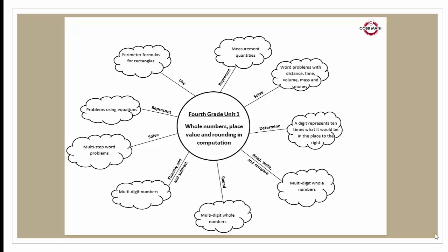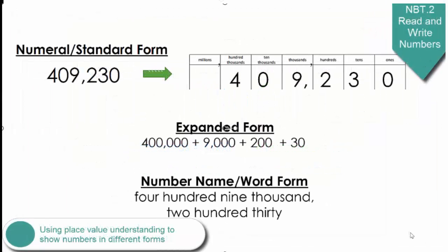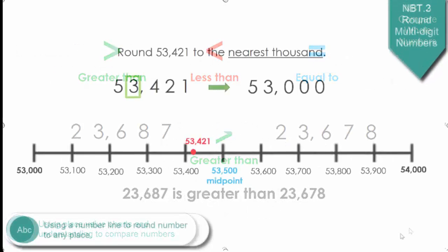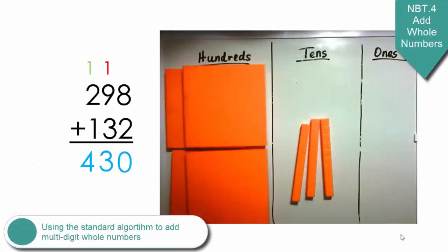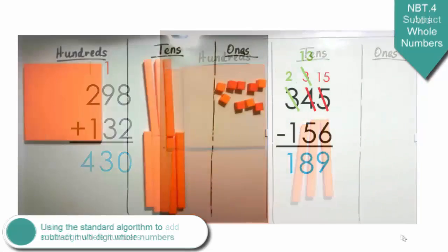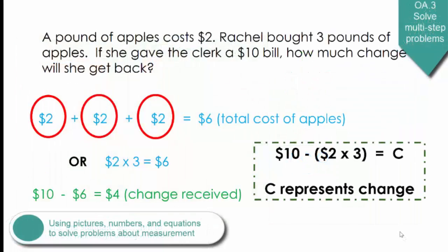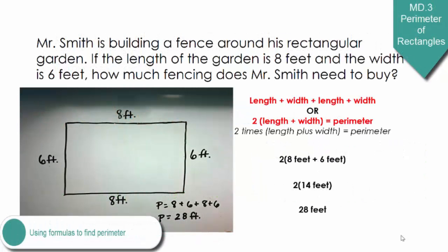In summary, in Unit 1, 4th grade students will understand the power of 10, read and write numbers up to 1 million in numerals, number names, and expanded form, compare multi-digit numbers using symbols, round numbers to any place, fluently add and subtract multi-digit whole numbers using the standard algorithms, solve multi-step problems about measurement and use equations to represent the problems, and use perimeter formulas for rectangles. Thank you for your time.